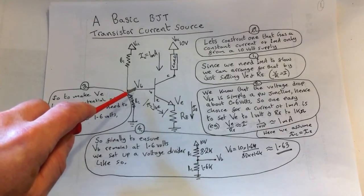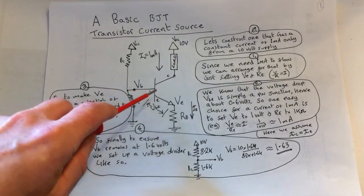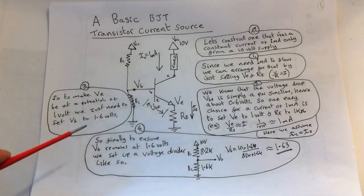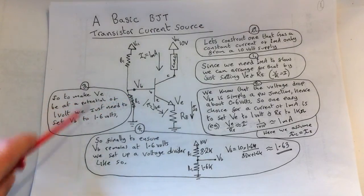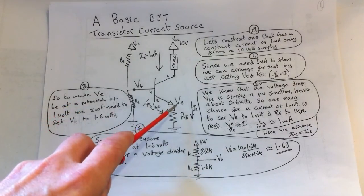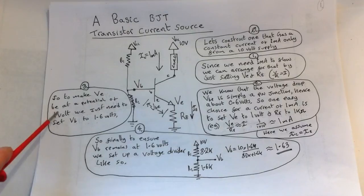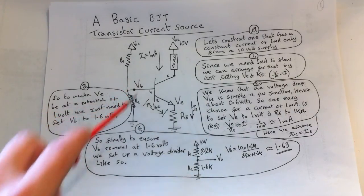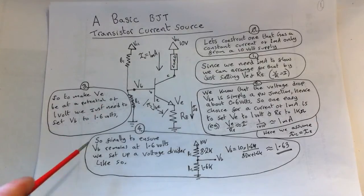So to make the voltage at the emitter be at a potential of one volt, we just need to set the base voltage to 1.6 volts.